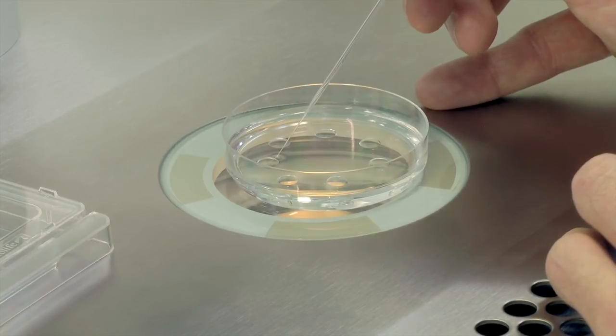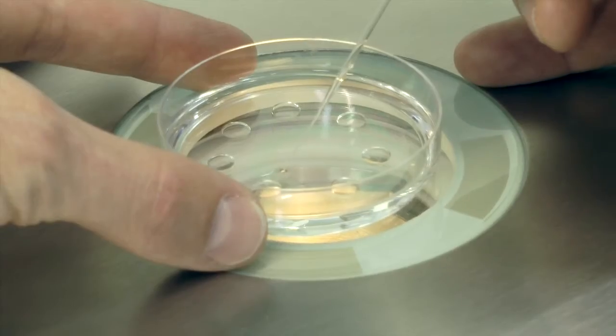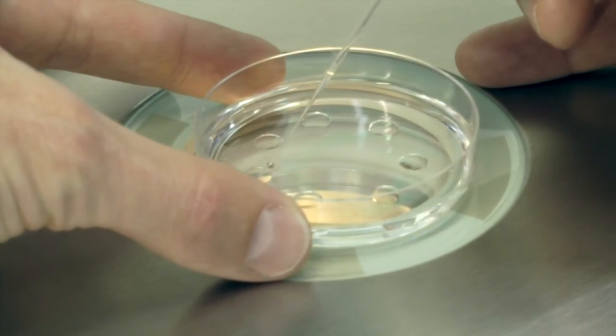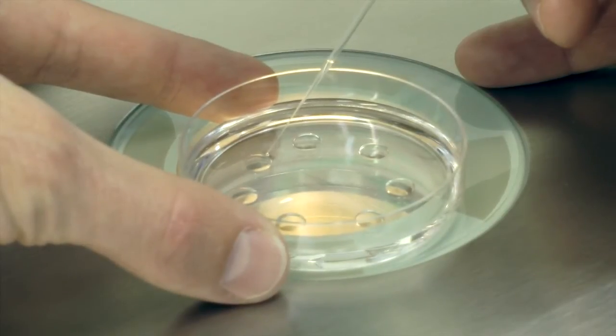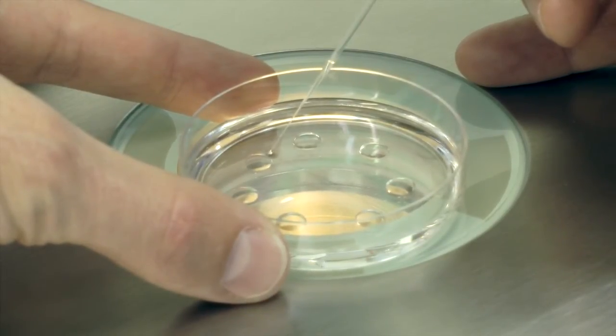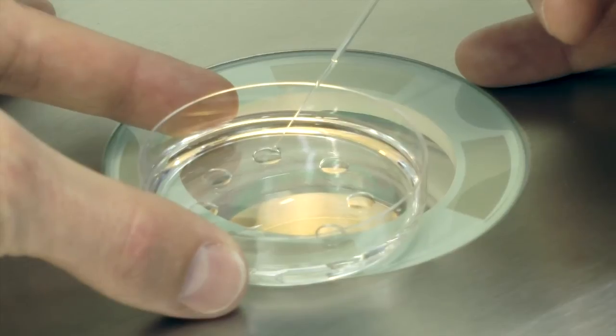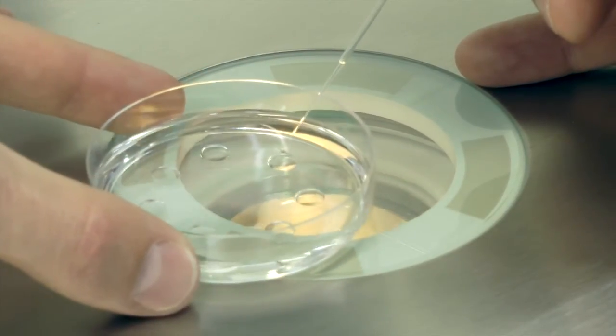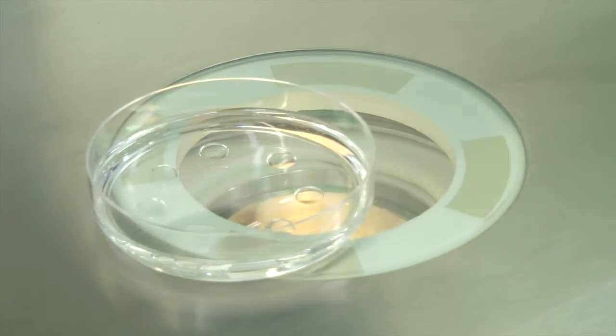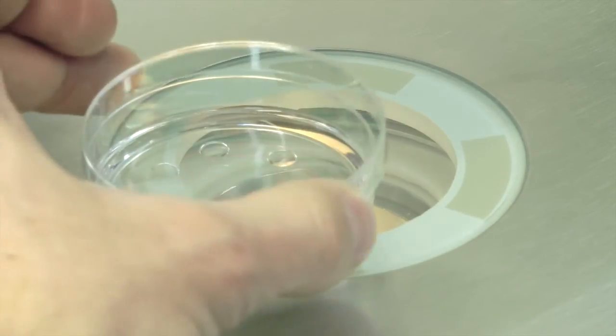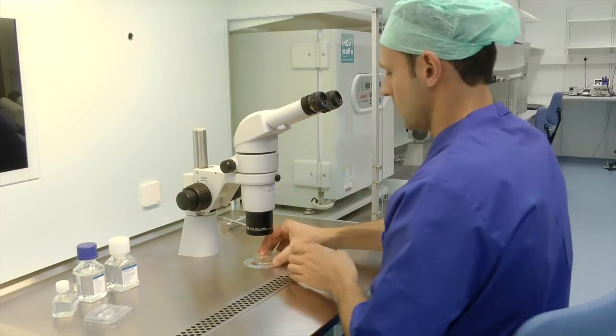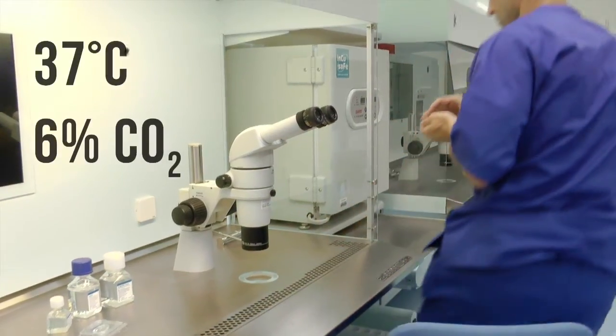If you are assessing the ICSI oocytes, then you can use the G1 Plus dish, the micro droplet dish that you have prepared the day before. Wash the zygotes extensively in the G1 Plus micro droplets that you have prepared the day before, and then place them into new G1 Plus droplets. Culture them at 6% CO2 and 37 degrees Celsius.